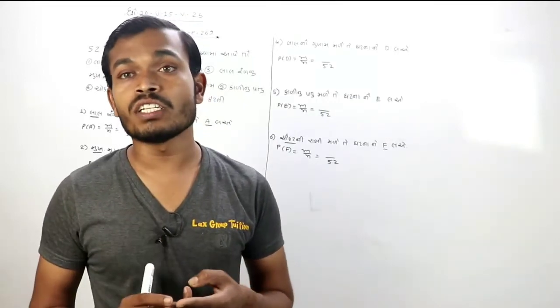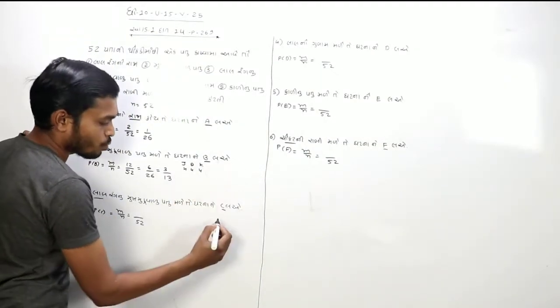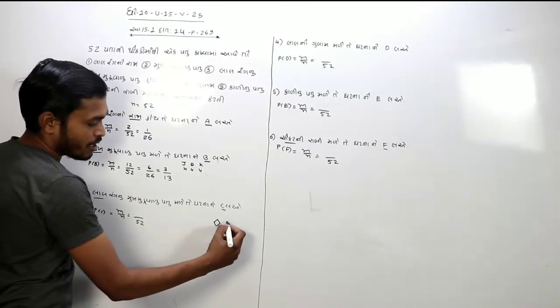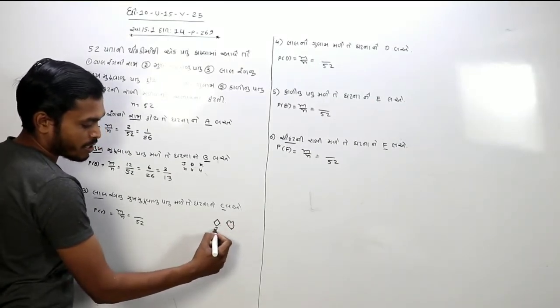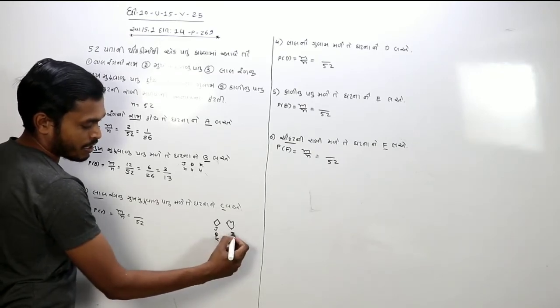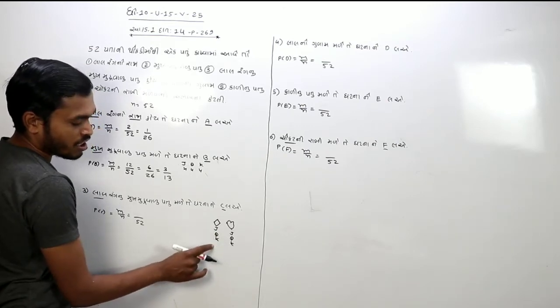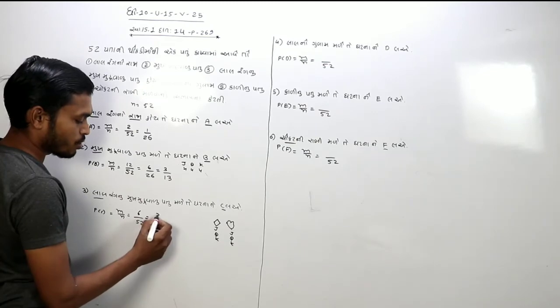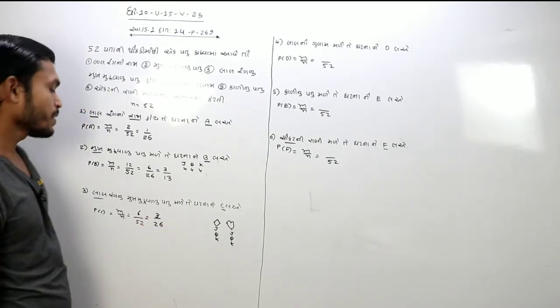પતું કલાને ખ્યાલ જે કે એક તોં પતુાવાંજ મીત્રો ચોકટટ્ પતેપ એક કલાર લાલ હેજે આને એક લાલ